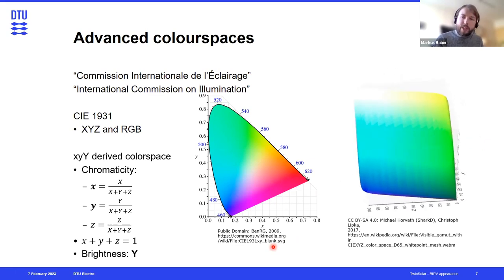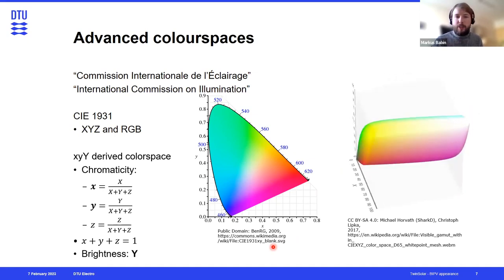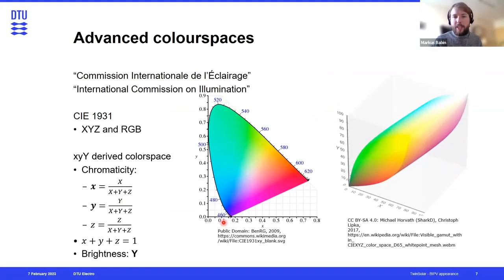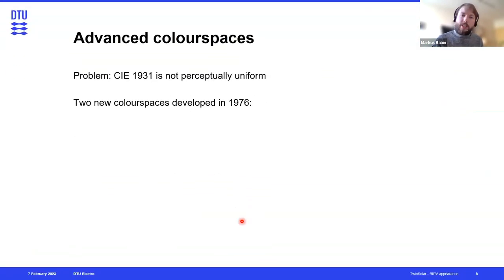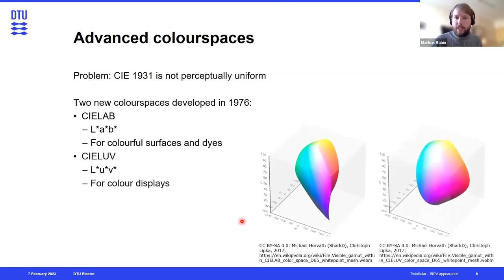However, what was very quickly noticed is that this is not a very accurate representation of human perception — it's not perceptually uniform. The human eye is actually able to distinguish a lot more colors in the blue range than this color space would suggest. That is why in 1976, the CIE developed additional color spaces: the LAB color space, used for colorful surfaces and dyes, and the LUV color space, used for displays.